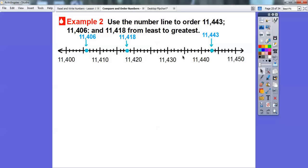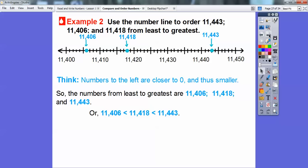Once you have them placed on the number line, the smallest number is to the left. The numbers that are closest to zero are the ones farthest to the left, so they're smaller. The numbers from least to greatest are this one, then this one, then this one. So 11,406 is less than 11,418, and that's less than 11,443.